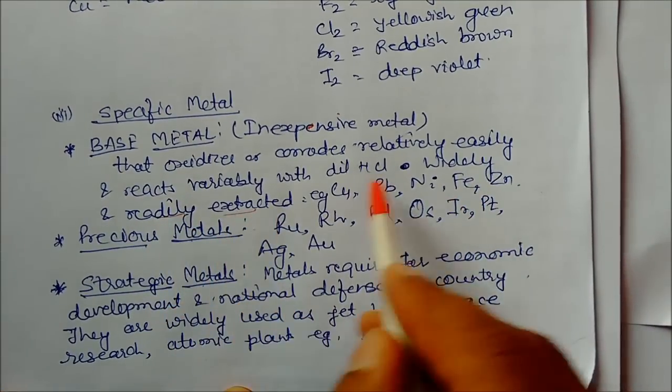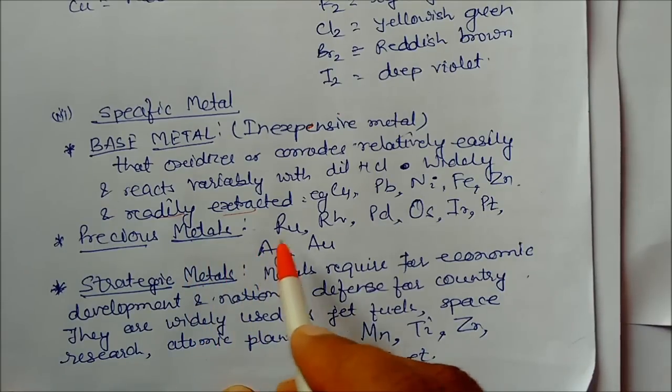Precious metals are less abundant on the Earth's surface: ruthenium, rhodium, palladium, osmium, iridium, platinum, silver, and gold. They are also very costly.